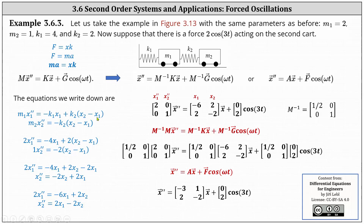For mass two, we have M two times X two double prime on the left. As mass two moves to the right, the second spring is stretched, giving a negative force equal to K two times the difference of X two and X one — negative because the force is to the left. Substituting M one, M two, K one, and K two into the equations and simplifying gives the two equations shown at the bottom.